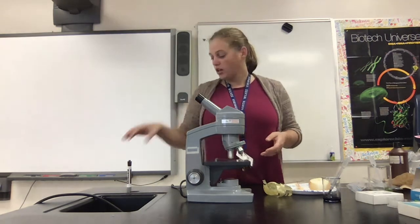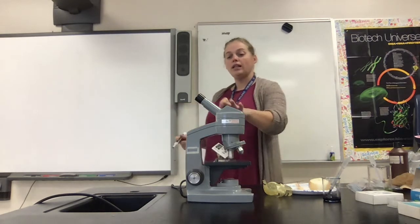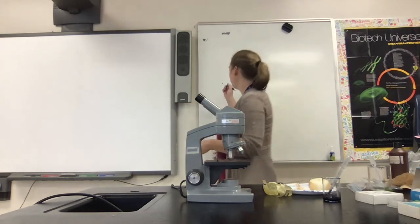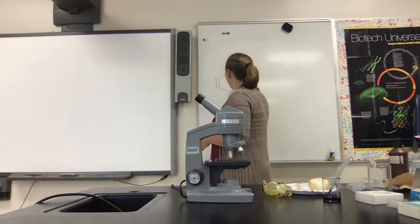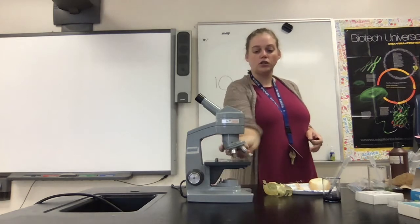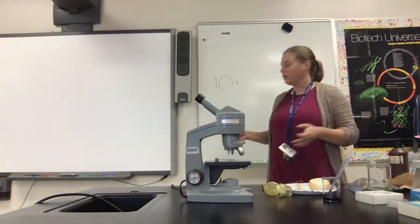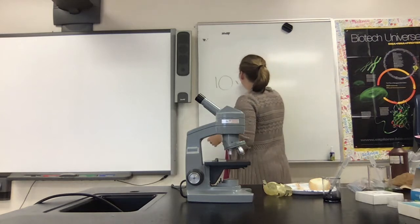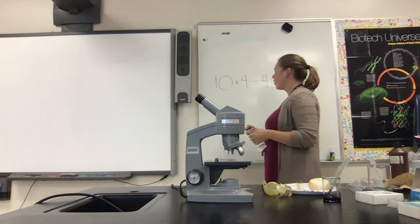However, we need to keep in mind that we also have a lens in the eyepiece. So if we're trying to calculate the total power of magnification, we need to take the power of the eyepiece — in our case, that's 10 — and multiply it by the power of the objective. If we are looking at the smallest objective, which is worth 4, then we would have a total magnification of 40.